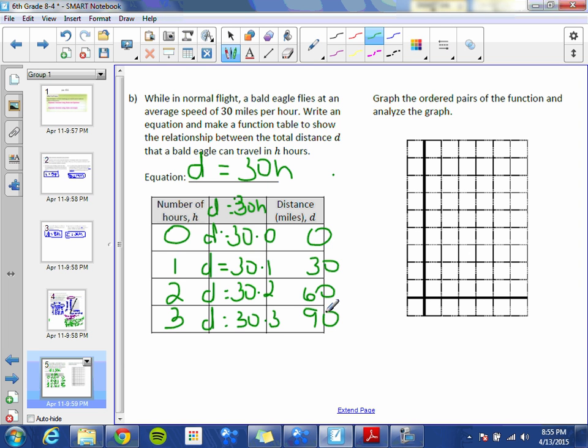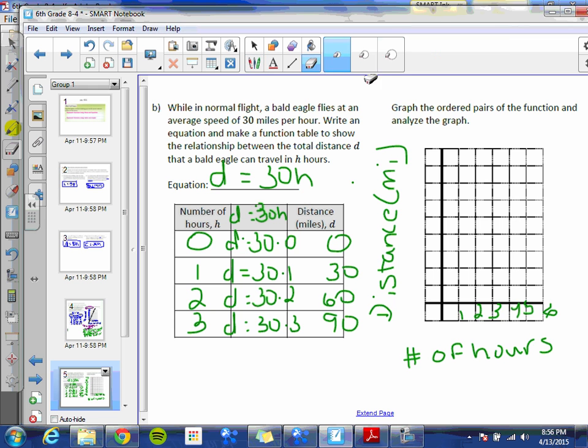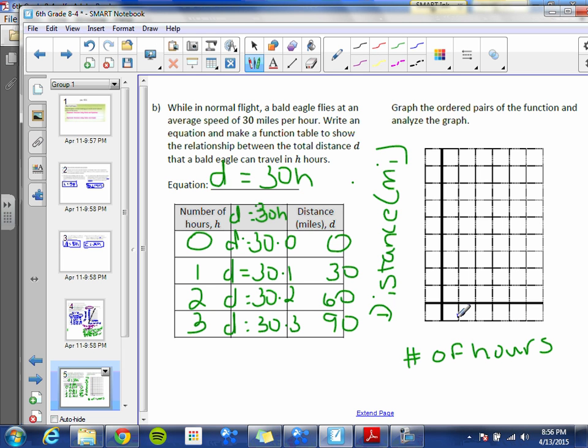Graph the ordered pairs of the function and analyze the graph. On the bottom is our independent variable, which is the number of hours. And on the left-hand side on our y-axis, our dependent variable is the distance. And we can just put in parentheses miles. We can count by 1's on the bottom again. So 1, there we go, 2, 3, 4, 5, and 6. That's better.